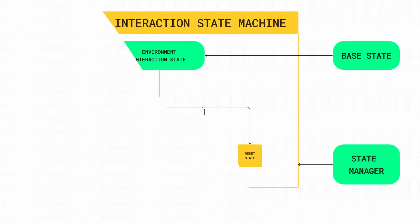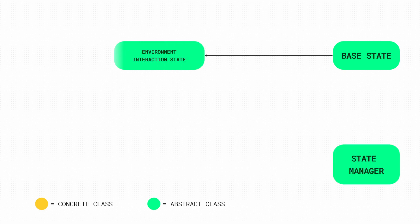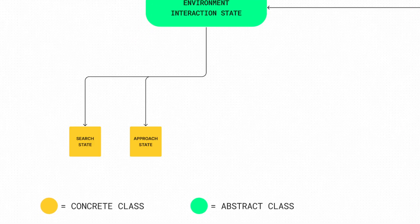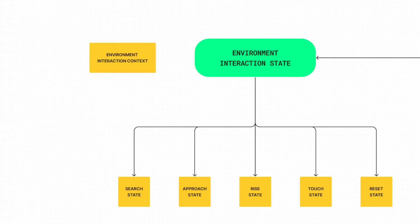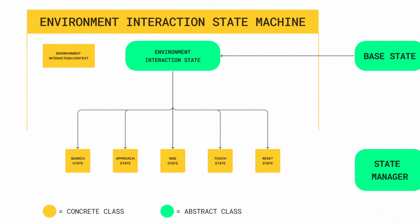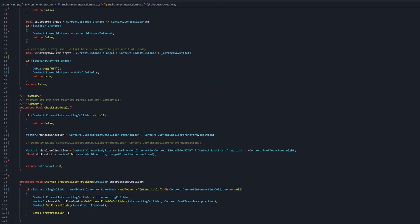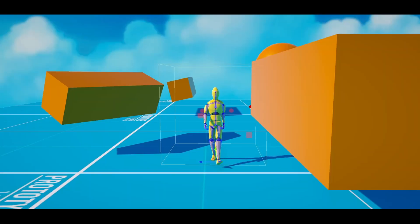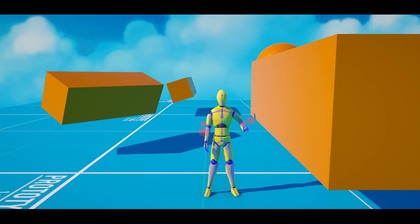Here is a mockup showcasing the full implementation of the state machine model that we'll build together. The environment interaction state machine consists of the following classes: abstract classes — the base state, the state management class (state manager), and the environment interaction state; the five previously mentioned concrete state classes; a context class (environment interaction context); and a concrete state management class (environment interaction state machine). As we implement each class, we'll understand how they work together to create our procedural animation that plays through all five steps or correctly resets from any cancellation trigger.